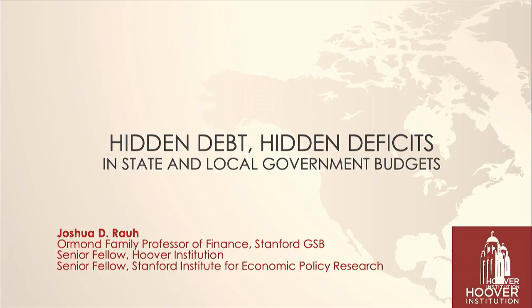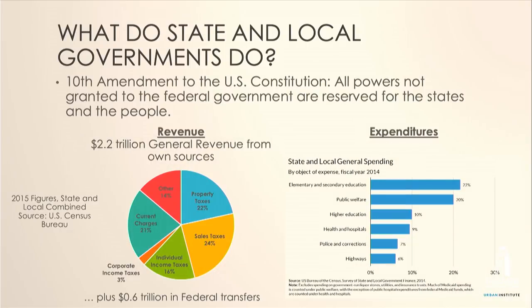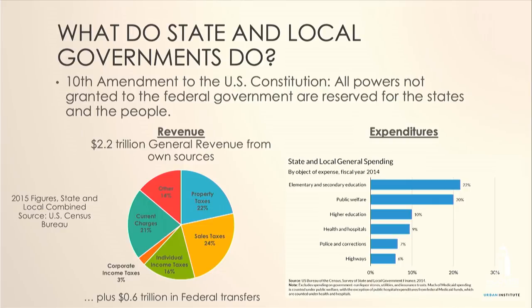The title of my talk is Hidden Debt, Hidden Deficits in State and Local Government Budgets. As an overview: what do state and local governments do? The Tenth Amendment to the U.S. Constitution specifies that all powers not granted to the federal government are reserved for the states and the people. There are a number of those powers that states have assigned themselves.